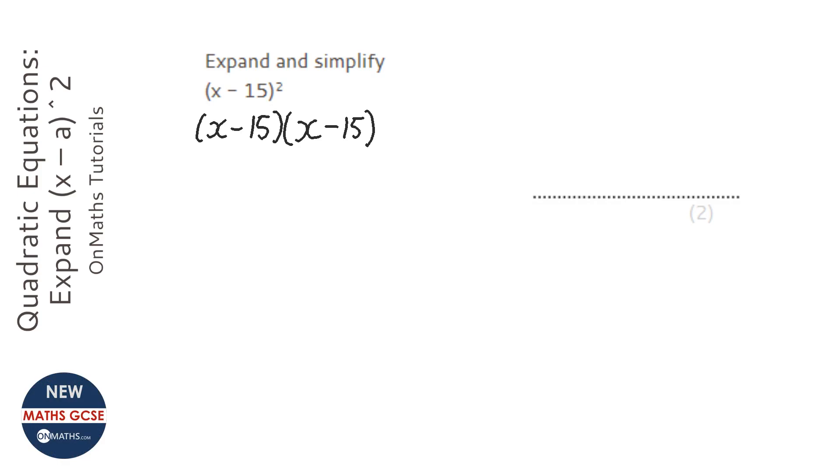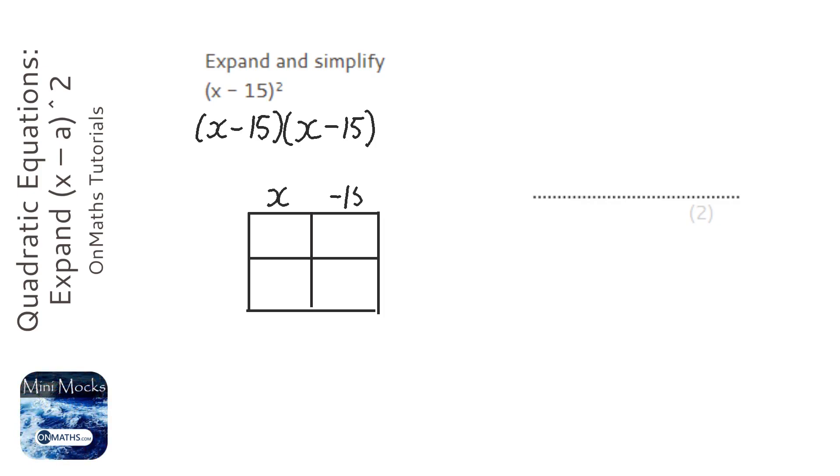There are multiple ways of doing the next bit. I'm going to use the grid method for this one. We put the first bracket at the top, x minus 15, and the other bracket down the side which is just x minus 15 as well.